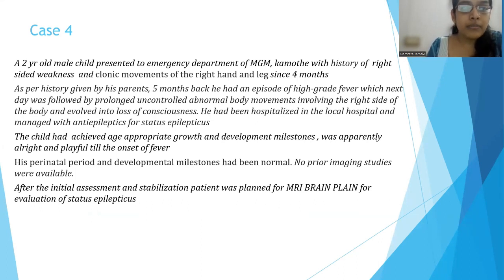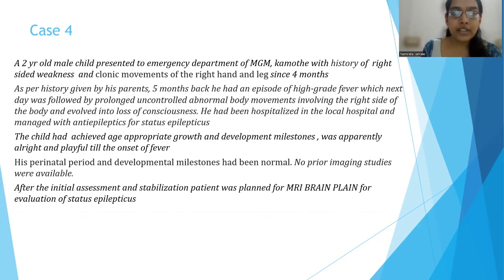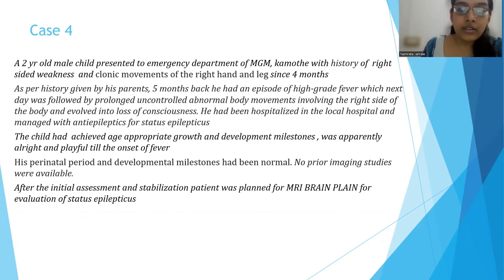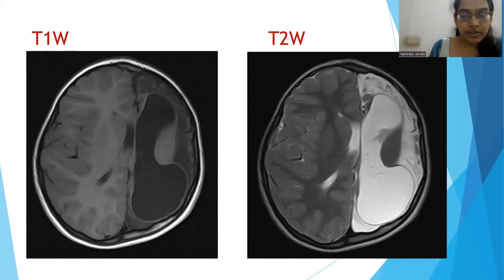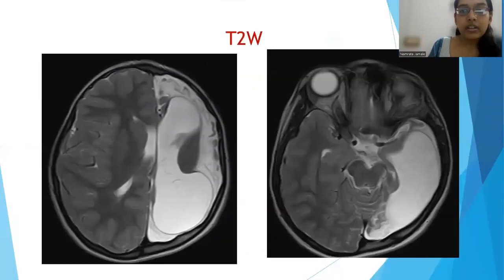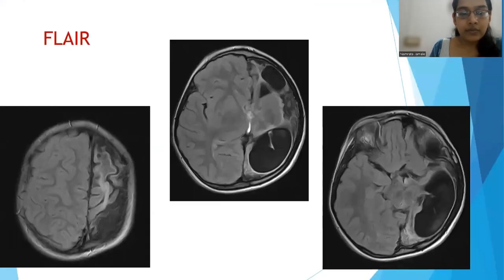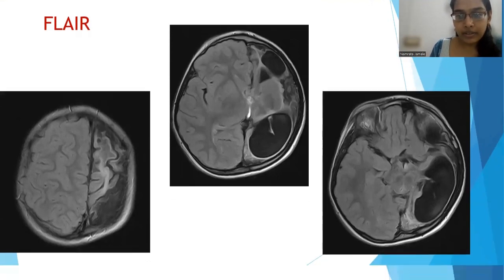Fourth case: a two-year-old male child presenting with right-sided weakness and choreiform movements in the right hand and leg since four months. He had a previous history five months back of a febrile episode followed by prolonged uncontrolled abnormal body movements involving the right side, and had been treated for status epilepticus. T2-weighted images showed diffuse cerebral atrophy involving the left cerebral hemisphere with areas of gliosis and significant dilatation of the left lateral ventricle. There were T2 and FLAIR hyperintensities in the cortical regions of the atrophied left cerebral hemisphere, and incidental atrophy of the left cerebral peduncle was also noted.